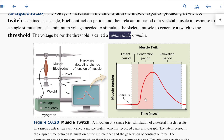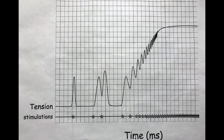The contractile period is when the muscle fiber is contracting. The relaxation period is when the muscle is relaxing. Those three parts together create a muscle twitch. The latent period is just a tiny sliver, then we have the contractile period and the relaxation period — all together that creates a muscle twitch. Remember, a muscle twitch is any time a stimulus causes the muscle to contract.